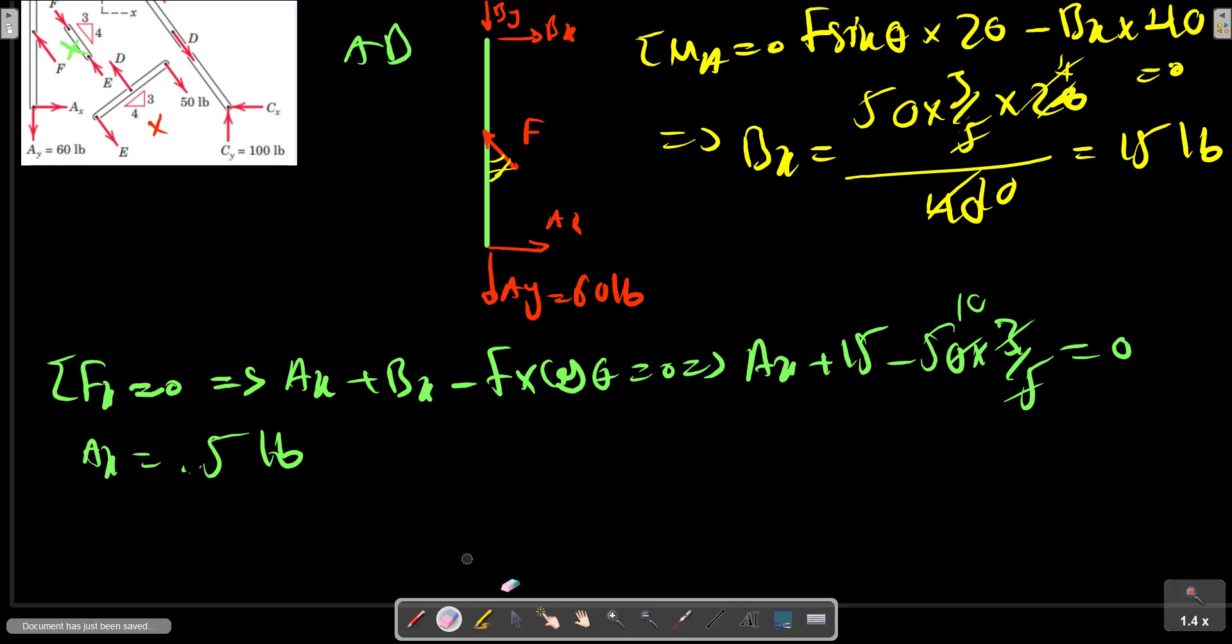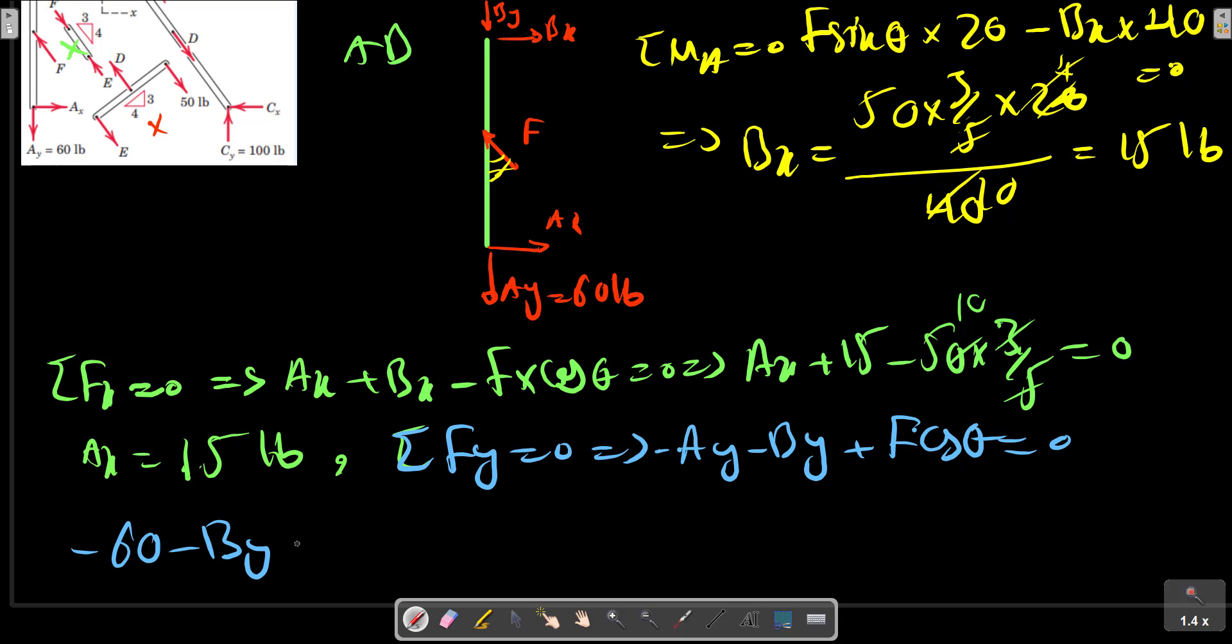Sigma F in the y-direction, Ay plus F cos theta minus 60 minus Py plus F equals 20 pounds.